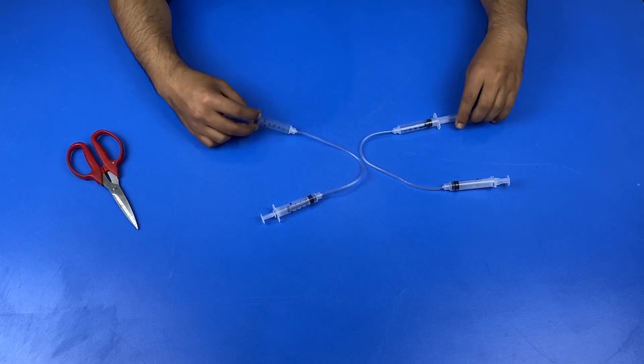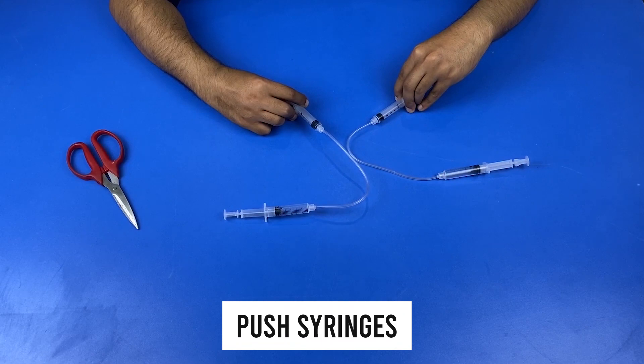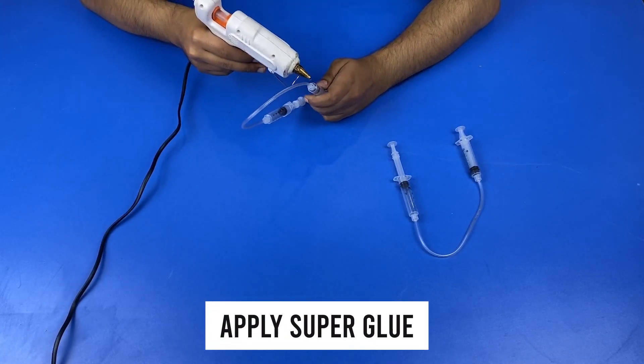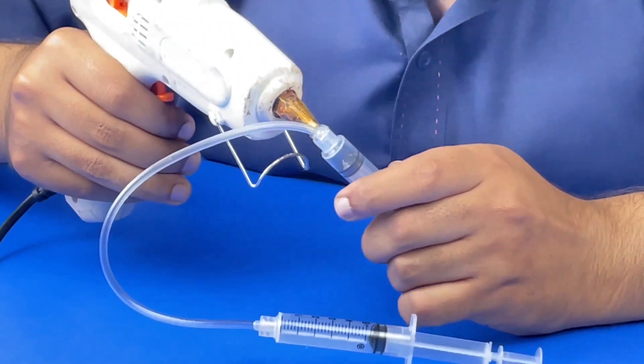Now we can see both the syringes are ready. So when we push from one side of the syringe, the pressure on the other side of the syringe increases. Now take super glue and apply it to the ends of the syringes so that no air can be leaked from any gap of the syringe.